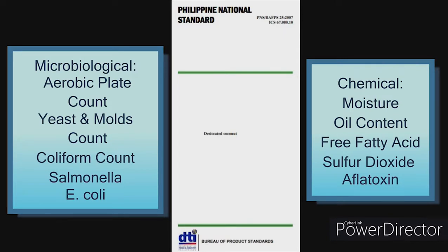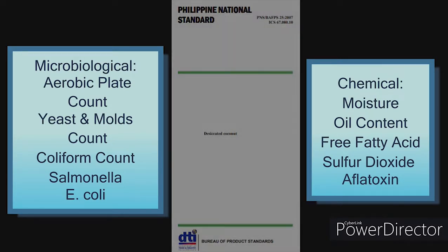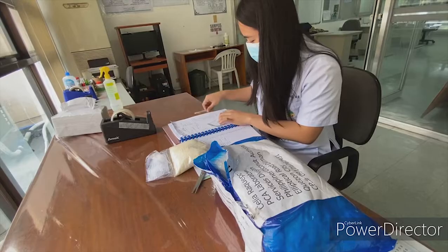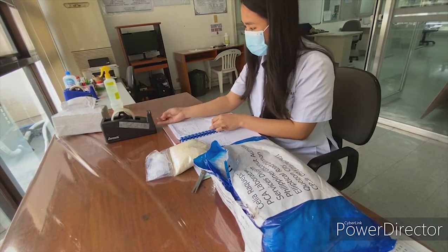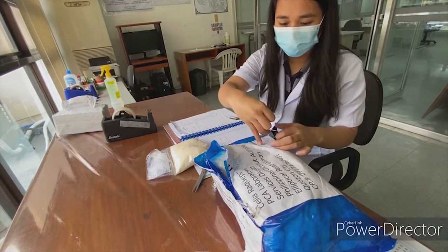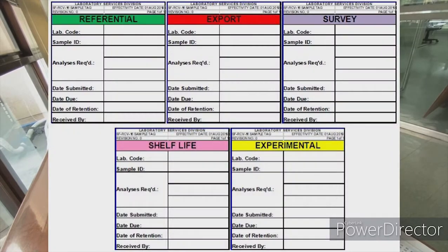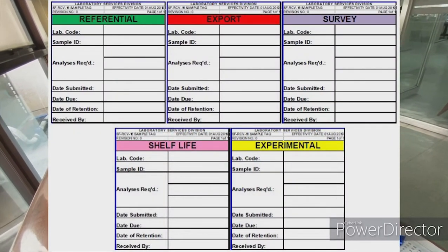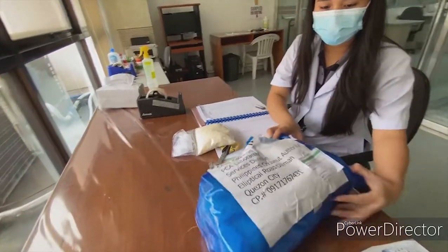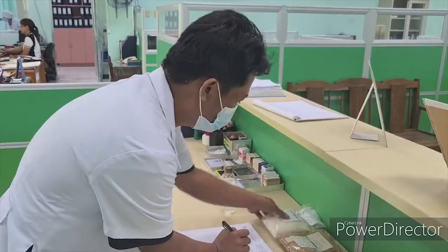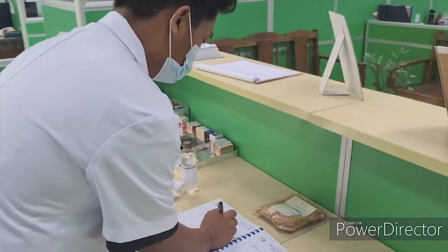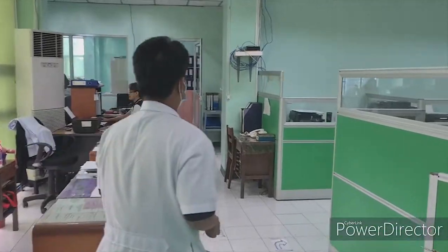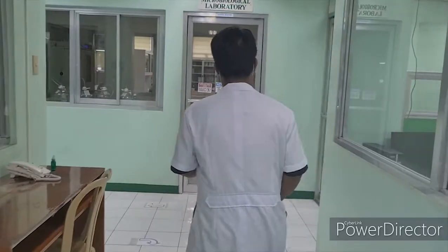For the chemical analysis, there is moisture, oil content, free fatty acid, sulfur dioxide, and aflatoxin. During sample receiving, a unique laboratory code is assigned for each sample and a corresponding sample tag is placed on the sample to ensure confidentiality and impartiality. The sample is then routed to the respective laboratories, firstly for microbiological analysis.